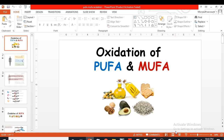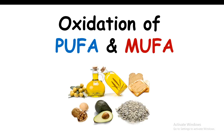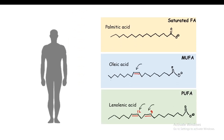In this video we are going to talk about oxidation of polyunsaturated and monounsaturated fatty acids. If we talk about fatty acids present in the human body, there are quite a lot of different types — for example saturated fatty acid, monounsaturated fatty acid, and polyunsaturated fatty acid.